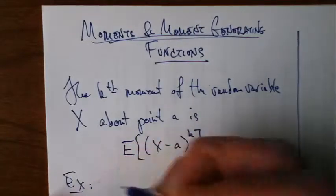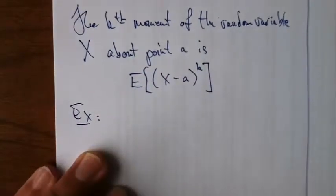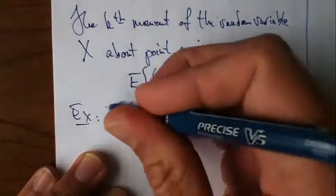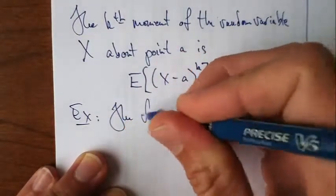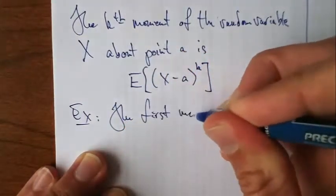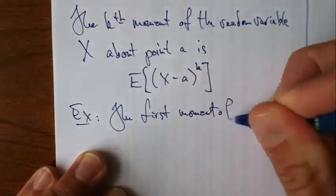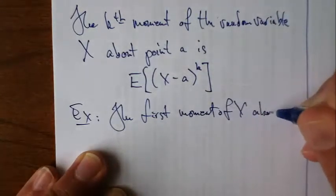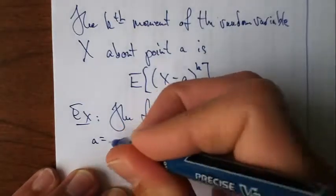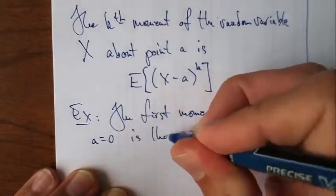So for example here, we can see that the first moment of X about 0 is the mean. The first moment of X about the point 0 is the mean.